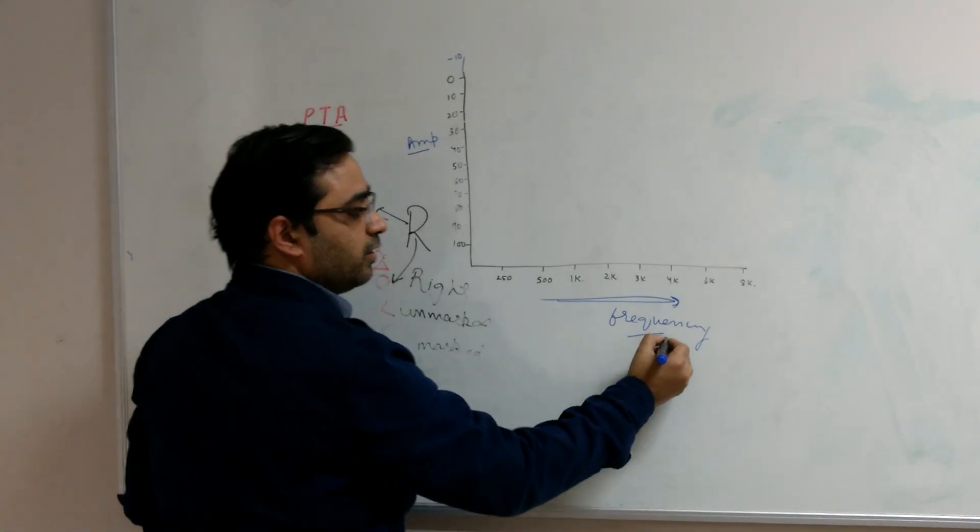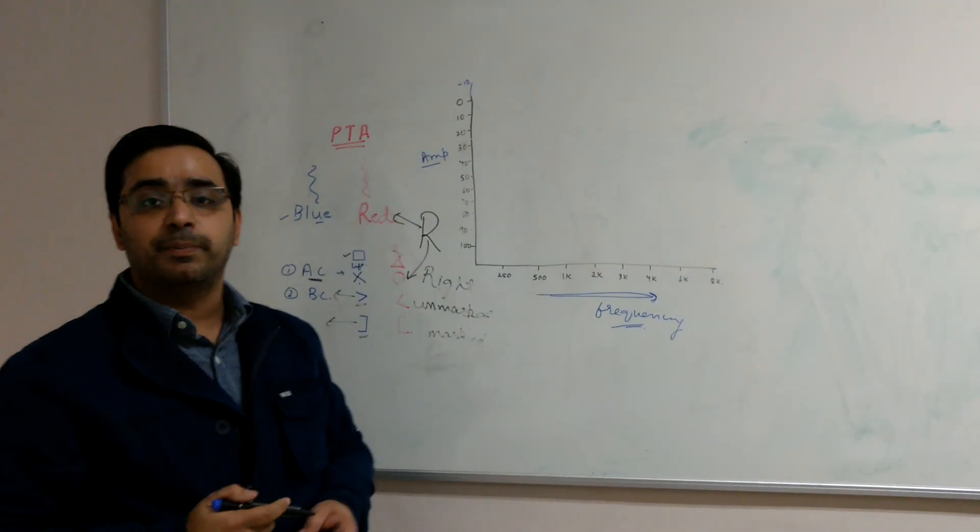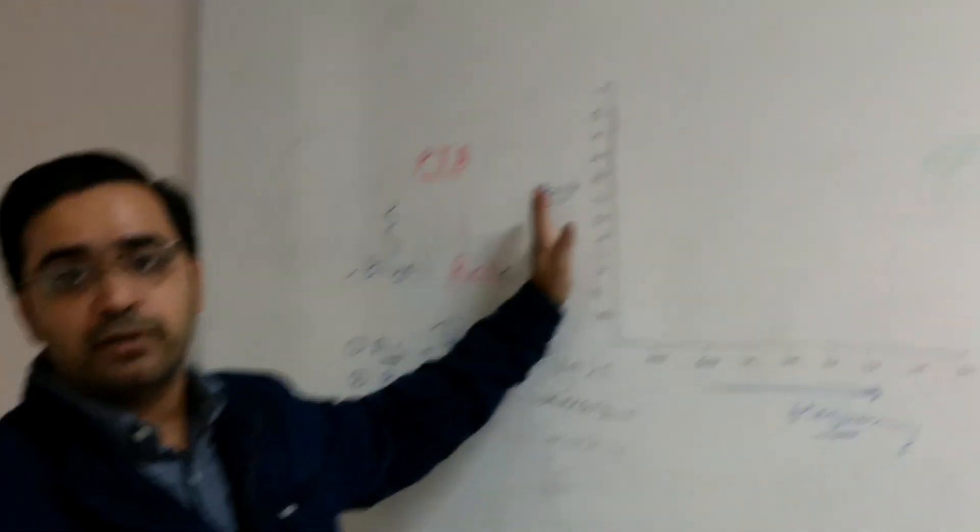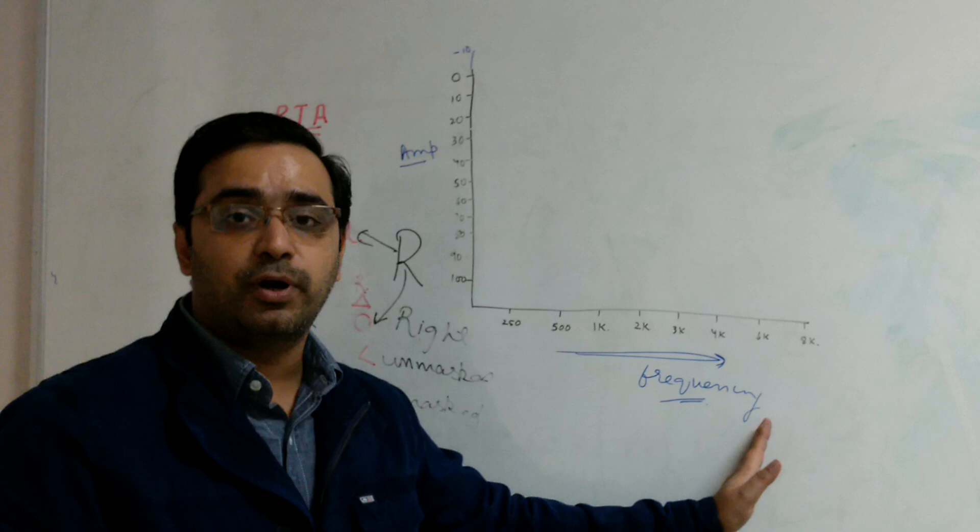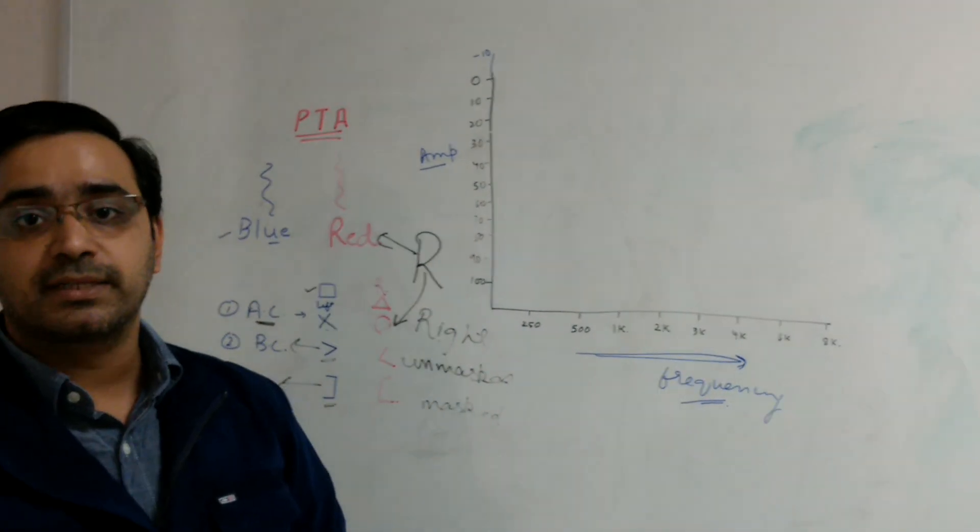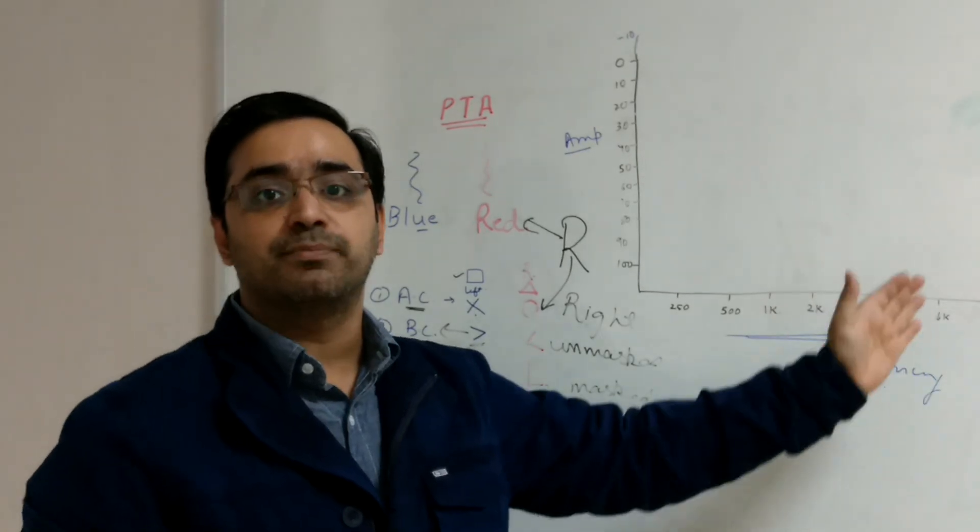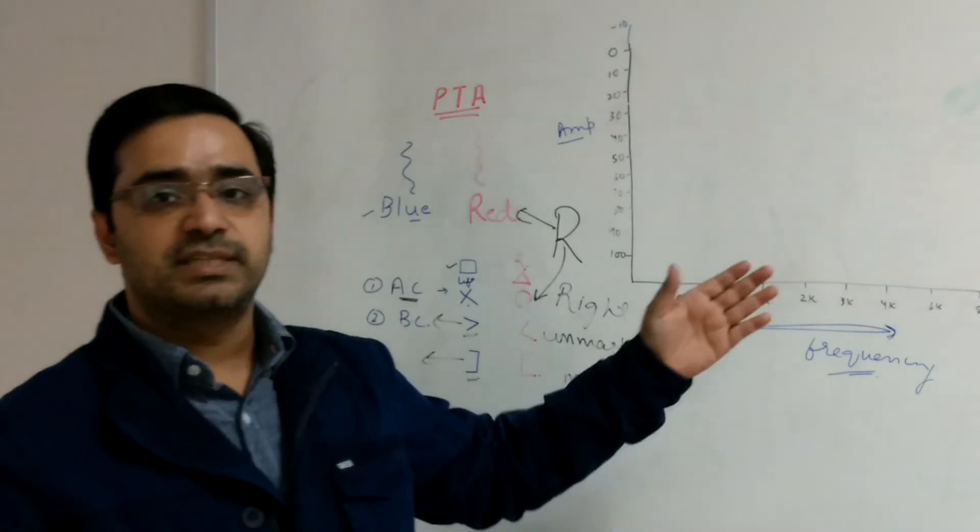What frequency the patient is having hearing loss. Both are important. Amplitude is important for quantifying the hearing loss. Frequency is important to diagnose certain conditions as well as which part of the hearing frequency is more affected.